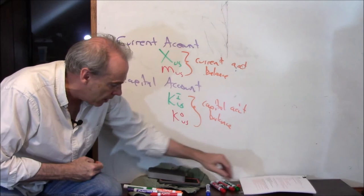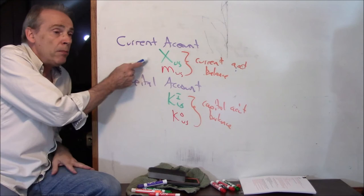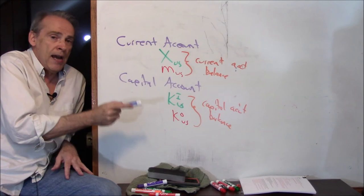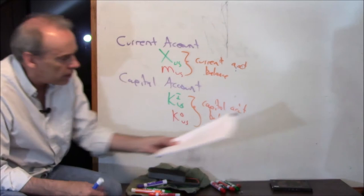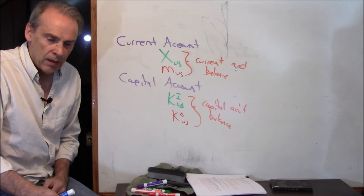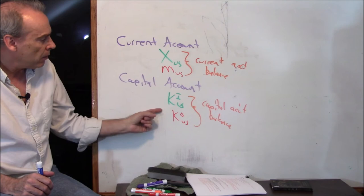Here's something important: whatever number you get on the current account, you must get the exact opposite number on the capital account, such that they add to zero. The U.S. has consistently had a negative current account balance and a positive capital account balance. Why must they add to zero? I have three ways to explain this, and it's going to be really important to understand as the semester goes on.